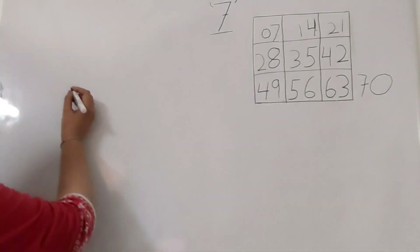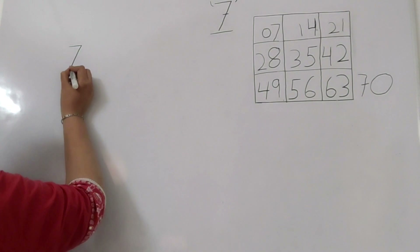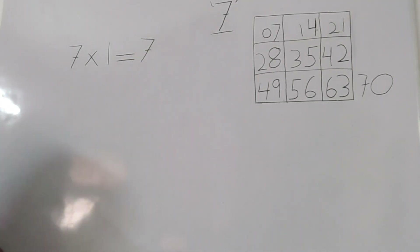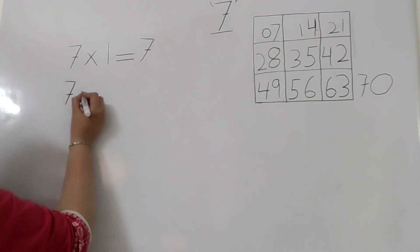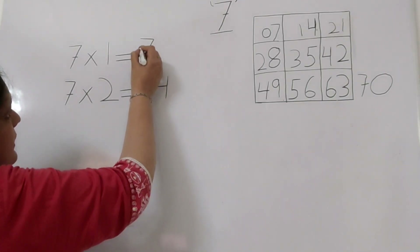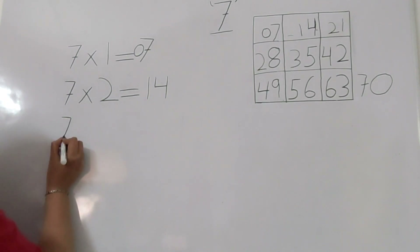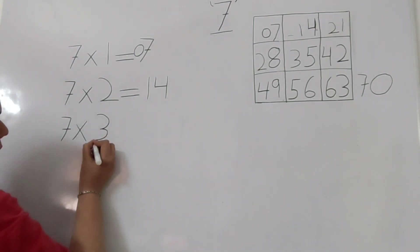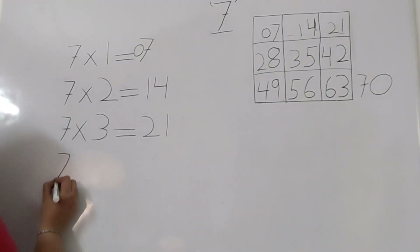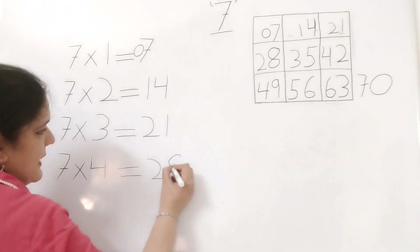So let's have a look. 7 times 1 is equal to 7 — you can write it as 07. 7 times 2 is equal to 14. 7 times 3 is equal to 21. Here we have 21.